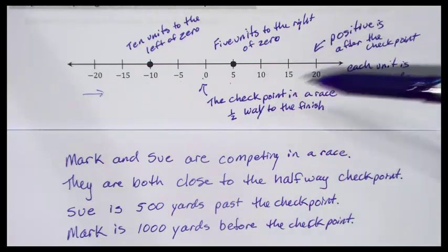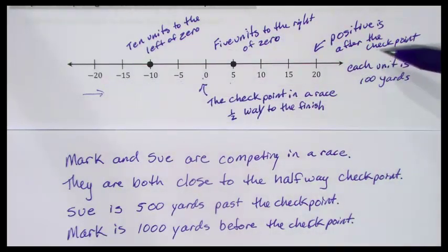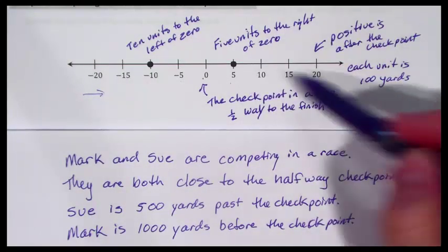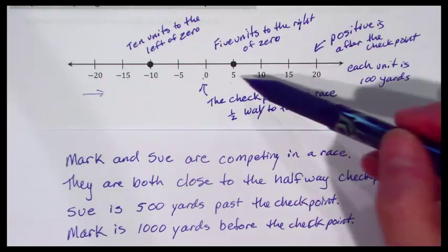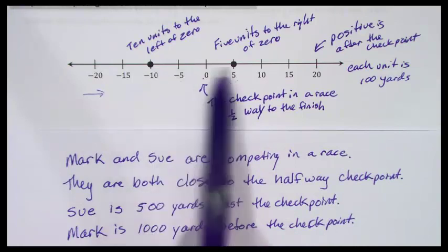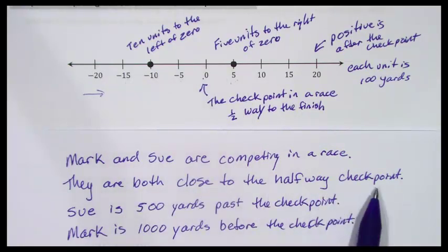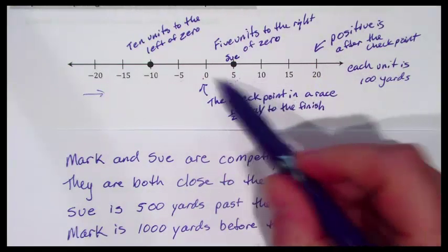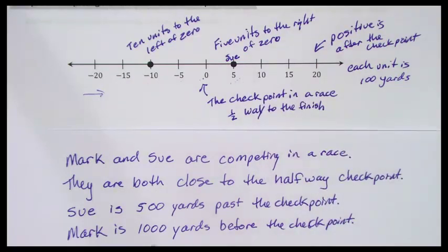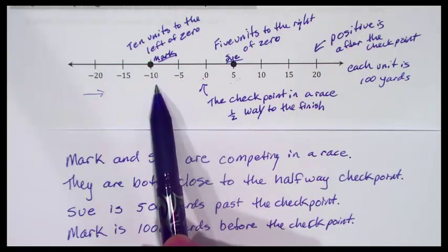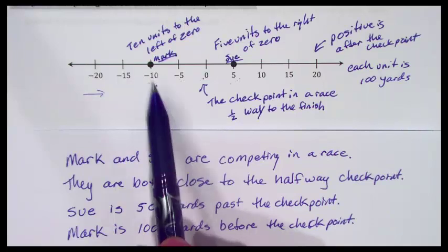I decided what my positive numbers meant — positives are after the checkpoint — and what my negative numbers meant — negatives were before the checkpoint. Each unit is 100 yards. I could have said seconds instead. Then I wrote my problem: Mark and Sue are competing in a race. Sue is 500 yards past the checkpoint — that's the point at positive 5. Mark is 1,000 yards before the checkpoint — that's negative 10. He still has 1,000 yards to go.